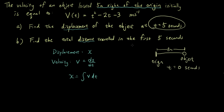What is the displacement of the object? To solve Part A, you need to understand that if we differentiate displacement x with respect to time, we get velocity — because velocity is the rate of change of displacement over time. So to get the displacement equation from the velocity equation, we need to integrate the velocity equation, which is the opposite of differentiating. The displacement is equal to the integral of v.